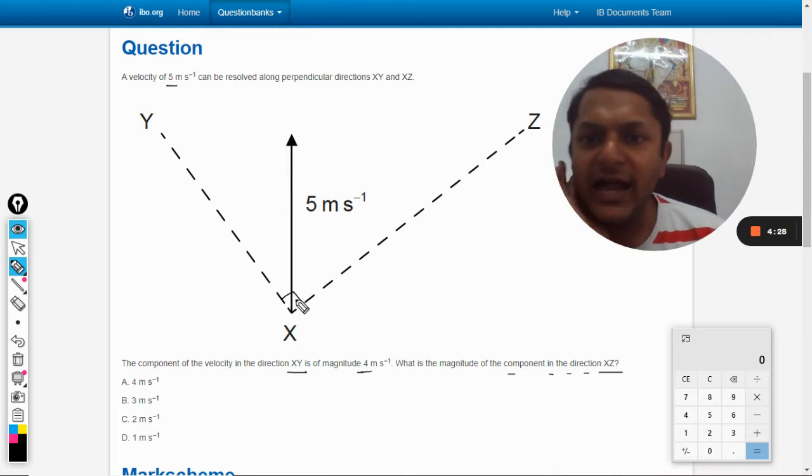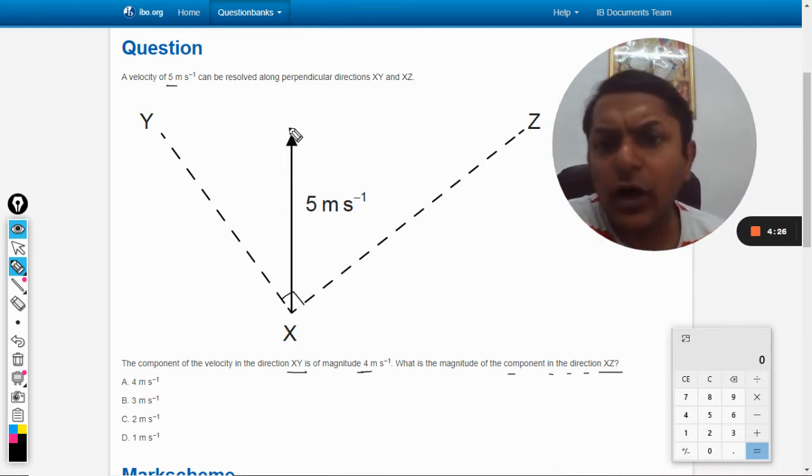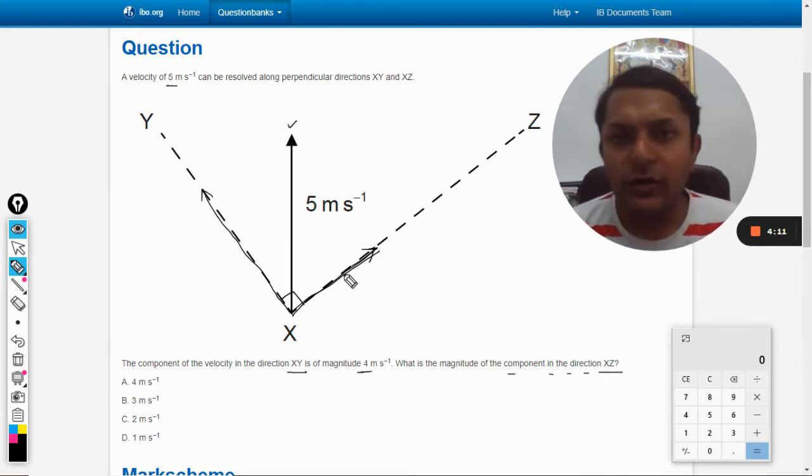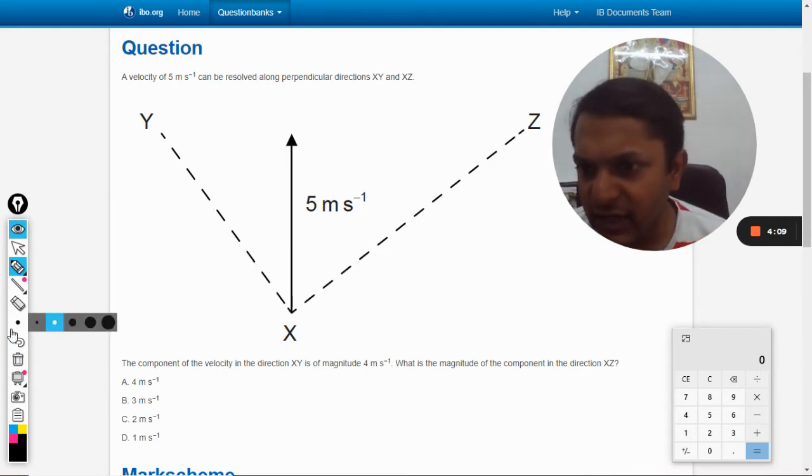We want to resolve this velocity vector into two. How do we do that? We can show the velocity component here like this, and another will be like this. Or we can create a triangle, and that triangle will be somewhat like this.